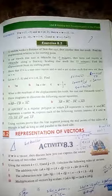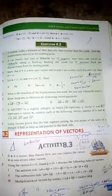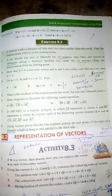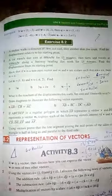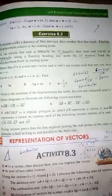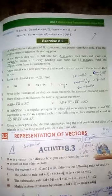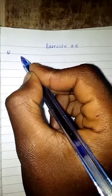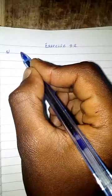A student walks a distance of three kilometers east, then another four kilometers south. Find the displacement relative to the starting point. Let's work through this problem from the textbook Exercise 8.2.